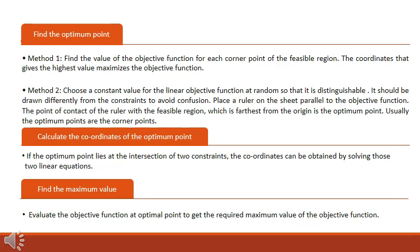Alternatively, if the objective is to minimize a linear function, then the point that minimizes the objective function is the optimum point. The second method is to choose an arbitrary constant value of the objective function and draw the straight line, drawn in such a manner that it is different from the constraints. Place a ruler parallel to the objective function and slide it along the feasible region to the farthest point possible. This farthest corner point touched by the ruler is the optimum point.